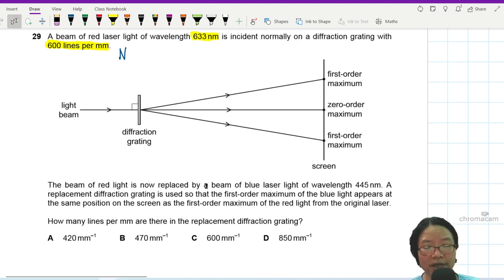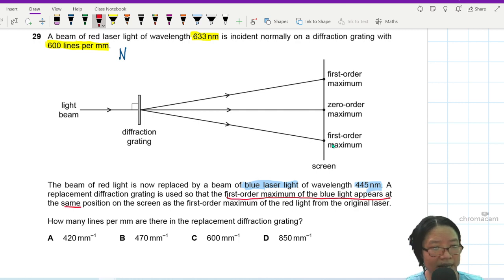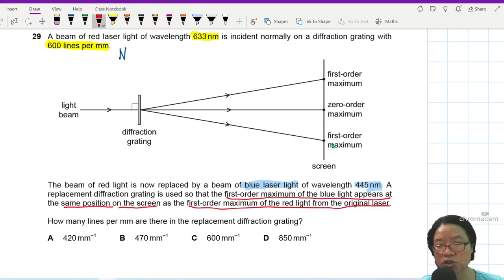Beam of red light is now replaced by blue laser light. We change color. So now we have blue laser light with wavelength of 445 nanometer. A replacement diffraction grating is used so that the first order maximum of the blue light appears at the same position on the screen as the first order maximum for red light from the original laser.